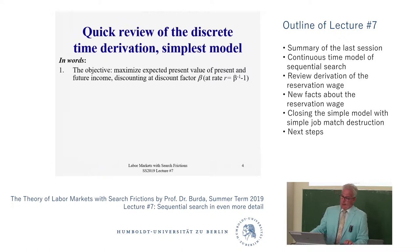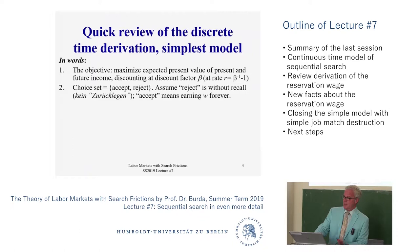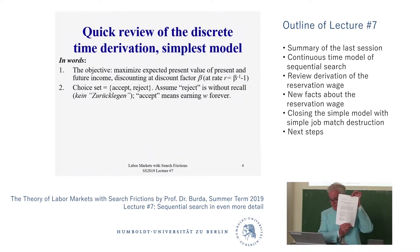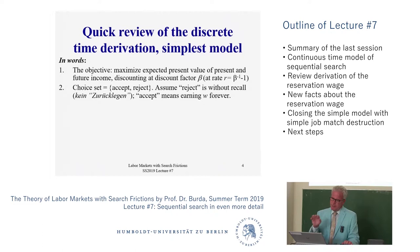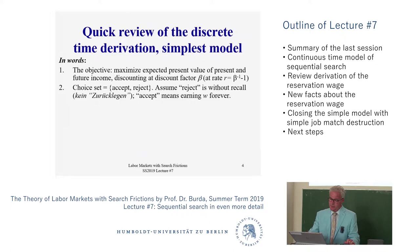These are risk neutral workers - there's no risk aversion in this model. We have a discount factor of beta; the implicit rate would be just beta inverse minus one. The choice set is very easy: you either take it or you leave it. If you reject it, you can't recall that wage offer. In a stationary environment, that turns out to be consistent with optimal behavior. This is stationary search - the person sees the same problem every period, faces the same probability distribution, and nothing changes by waiting.